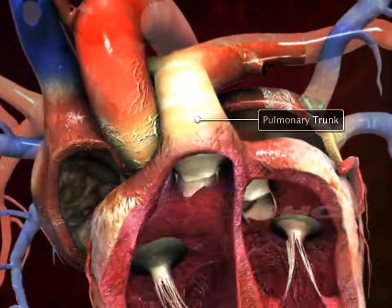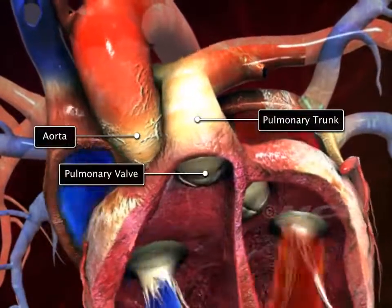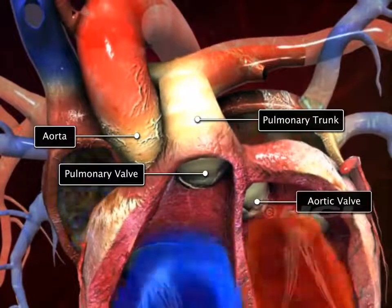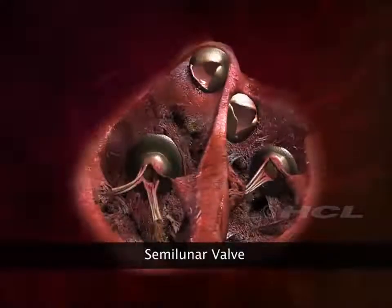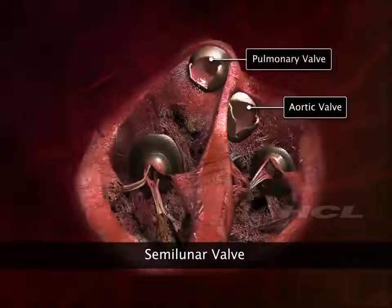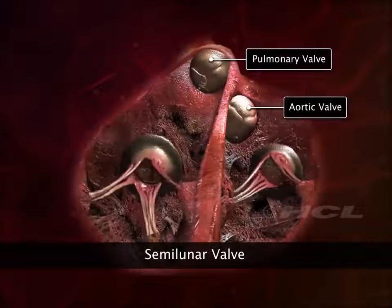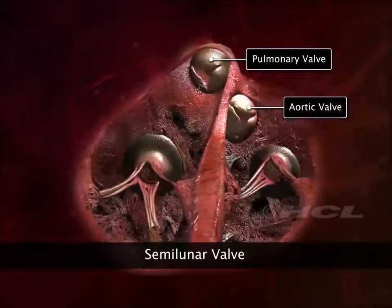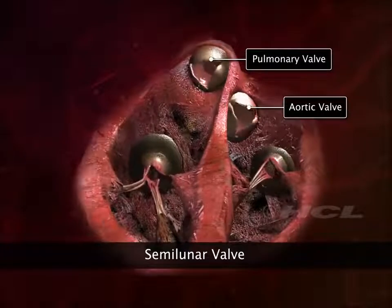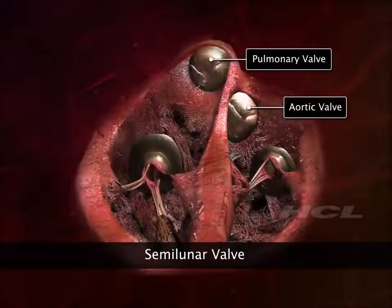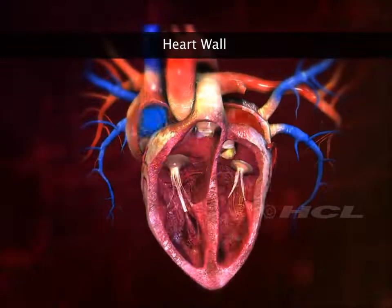There are also valves at the opening of the pulmonary trunk and the aorta. These are called the pulmonary valve and the aortic valve respectively. Because of their crescent moon shape, these two valves are also called semilunar valves. The characteristic "lub-dub" sound of the heartbeat is produced during the closing of the heart valves.